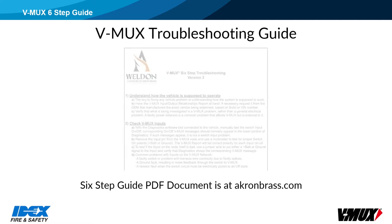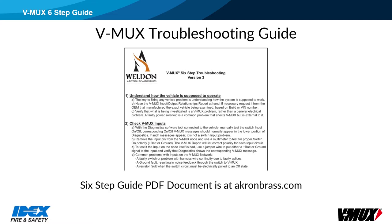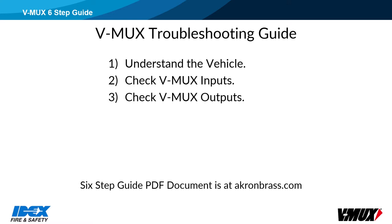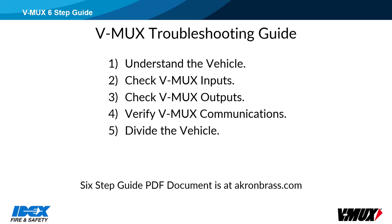The six-step VMux troubleshooting guide is a document created to guide people through the troubleshooting process. The PDF document is available at akronbrass.com. Here are the six steps: 1. Understand the vehicle. 2. Check inputs. 3. Check outputs. 4. Verify communication. 5. Divide the vehicle. And 6. Ask for help. This document is not always followed step by step — in a vehicle with no communication, there is no need to check inputs and outputs; you would go right to step 4.